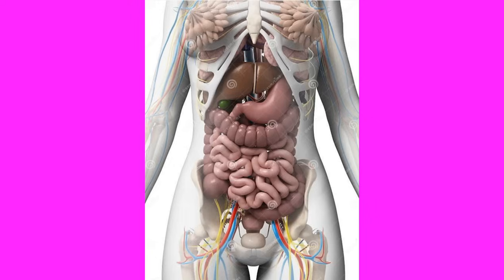One may ask: what is human anatomy and physiology as a branch of human biology? Anatomy and physiology as a sub-discipline of human biology refers to the study of the body's structures and functions. For example, we can explore the anatomy and physiology of different organ systems, and by that, we will explore those various organ systems and how they work to maintain homeostasis.